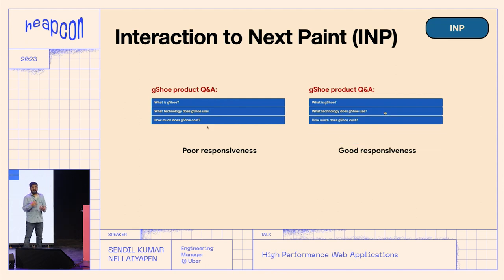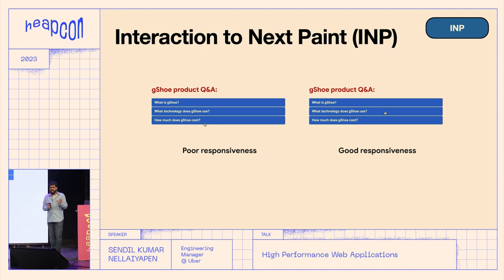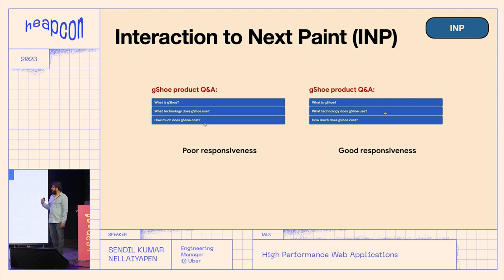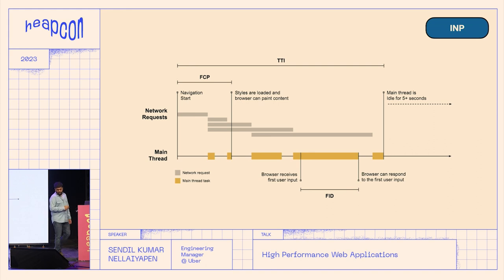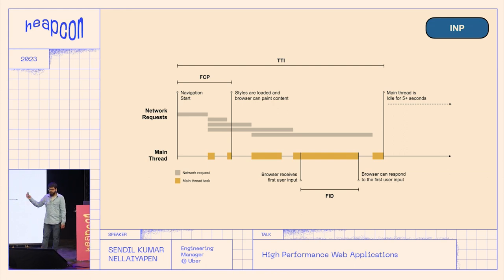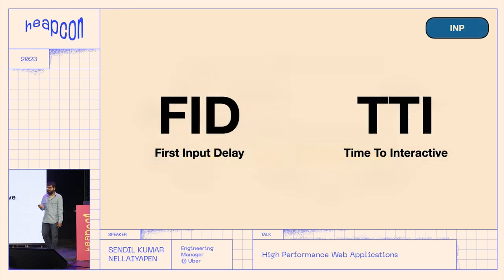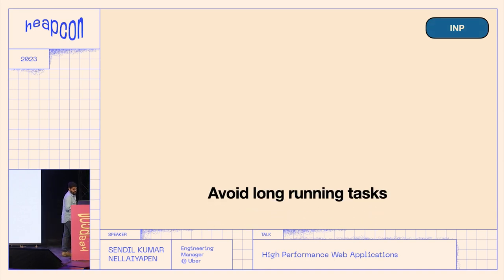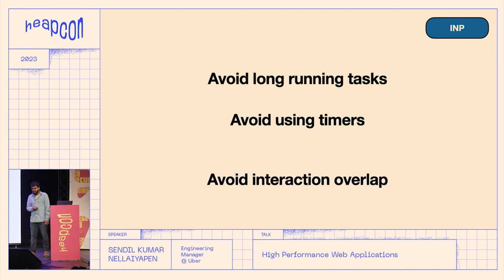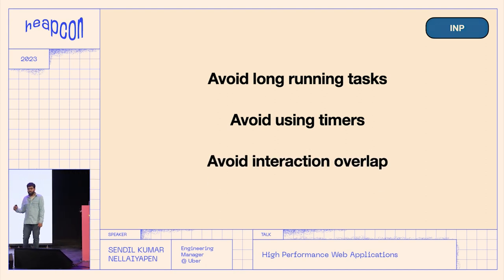The next thing is Interaction to Next Paint, which is about the perception of how interactive your site is — when a user clicks something, how can you make the response feel immediate? If there's more than 200 milliseconds of delay, the response is too slow and users get fed up. Your First Contentful Paint opens, then your Time to Interactive becomes ready, and your First Input Delay is when the user first clicks a button. Keep all these times smaller. Avoid long-running tasks, avoid using timers, and avoid interaction overlap.